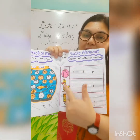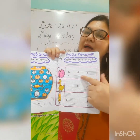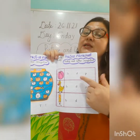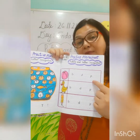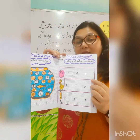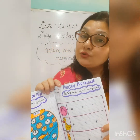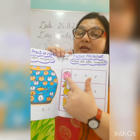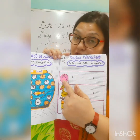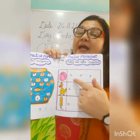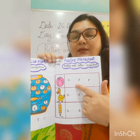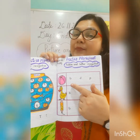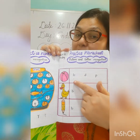So here are the pictures, and here we have letter B, D and P. What you have to do children? You have to recognize the picture and circle the correct letter. And then you have to write the letter P.